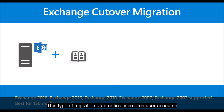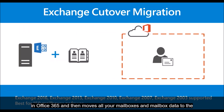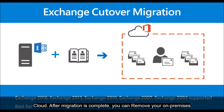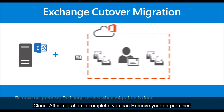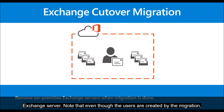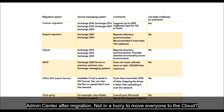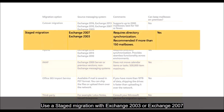This type of migration automatically creates user accounts in Office 365 and then moves all your mailboxes and mailbox data to the cloud. After migration is complete, you can remove your on-premises Exchange Server. Note that even though the users are created by the migration, you will still have to assign licenses to the newly created users in the Office 365 admin center after migration.